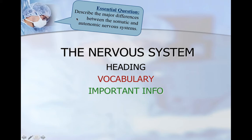Your essential question for today is to describe the major differences between the somatic and autonomic nervous systems.